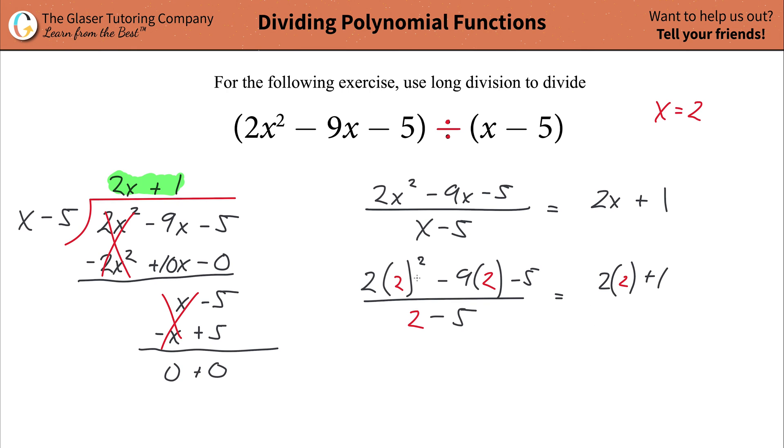So is this a true math statement? I hope it is. Otherwise we screwed up. So let's do it. 2 squared is going to be 4, 4 times 2 over here is going to be 8. So that's 8 minus 9 times 2 is going to be 18 minus 5. All over 2 minus 5 should be a negative 3. And somehow this has to equal this. 2 times 2 is 4 plus 1 is 5. Here's the moment of truth. Let's start combining these terms. So 8 minus 18 should be a negative 10. A negative 10 minus 5 should be a negative 15, negative 15 divided by 3. Oh, genius, is equal to a positive 5. So we are indeed right. We are indeed correct. And that's all there is to it.